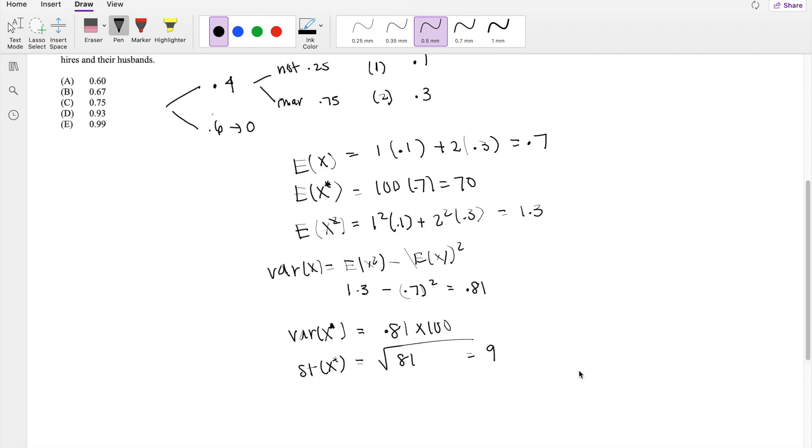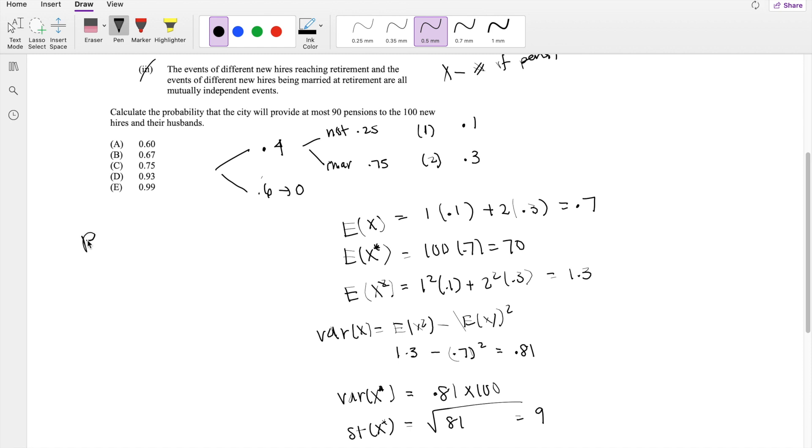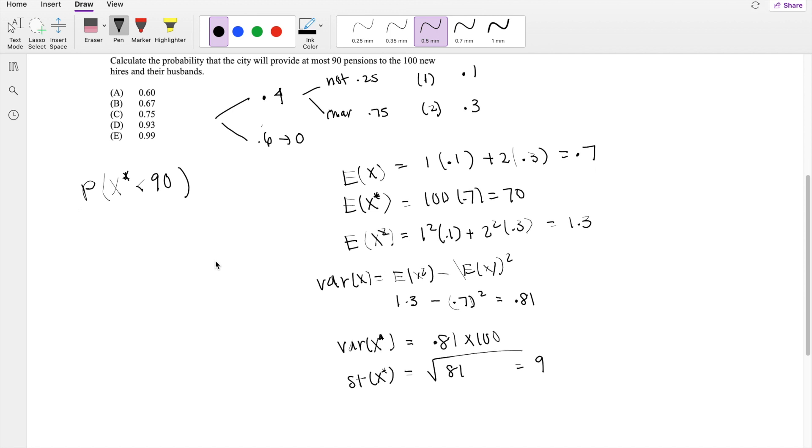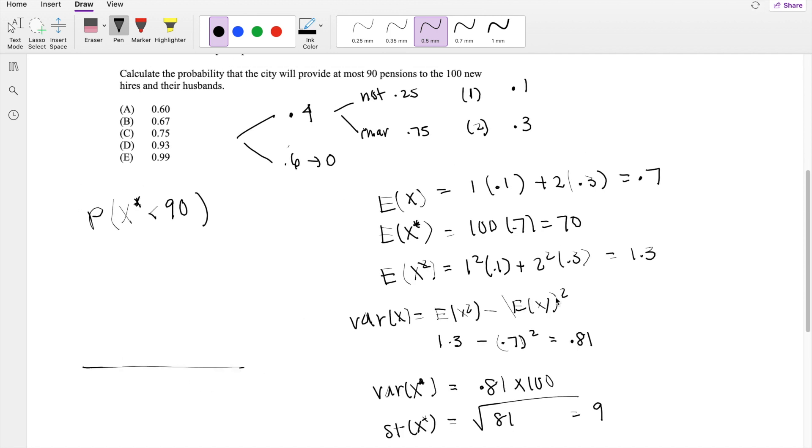We're looking to calculate the probability the city will provide at most 90 pensions to the 100 new hires and husbands. The problem is that the number of pensions is not continuous, it's discrete. You can only give it to one person or you don't. But when we use normal central limit theorem, we assume it's continuous. So we need to use a continuity correction on the discrete variable.